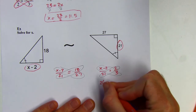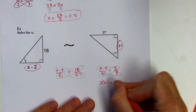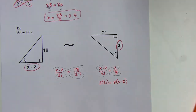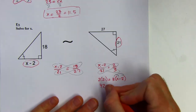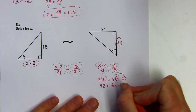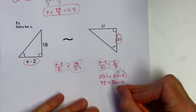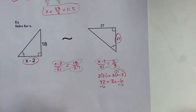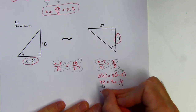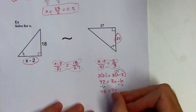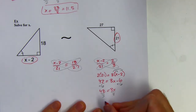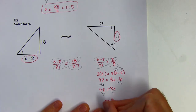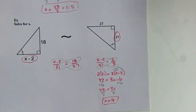Now cross multiplying: 2 times 21 equals 3 times the quantity (x − 2) — make sure to use parentheses. Distributing on the right: 42 equals 3x − 6. Add 6 to both sides, then divide by 3, and x equals 16. And that's it for today!